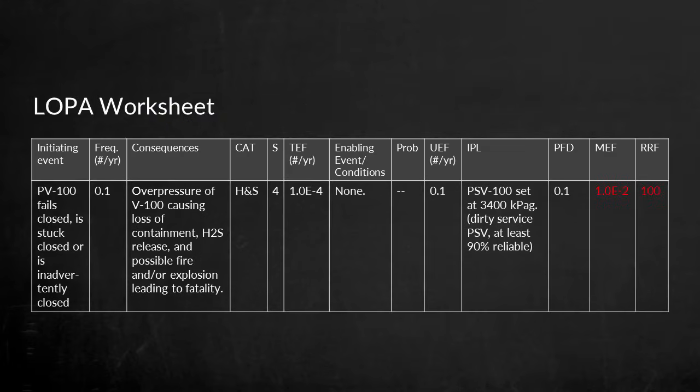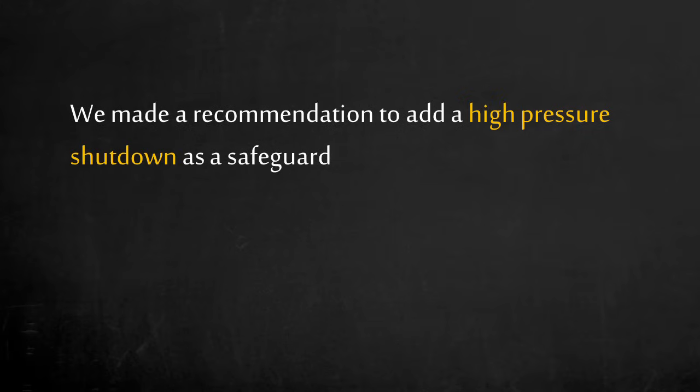Our tolerable frequency is 0.01% chance per year. The LOPA concluded that this scenario was 100 times more likely to occur than our tolerable frequency, even with the PSV in place. This is unacceptable. The additional risk reduction factor of 100 is required. To further reduce the likelihood of the vessel overpressuring, we made a recommendation to add a high pressure shutdown as a safeguard.